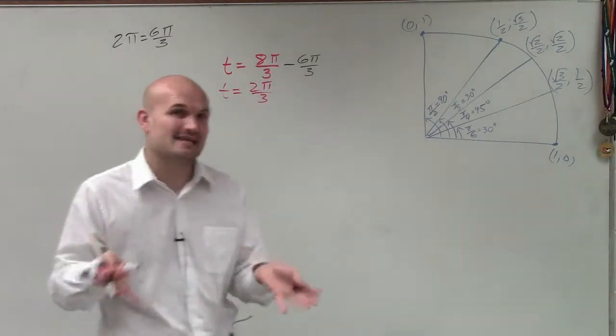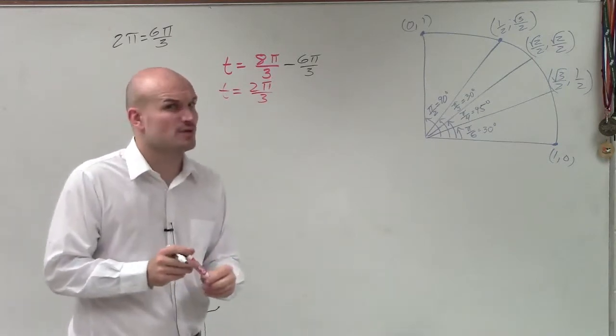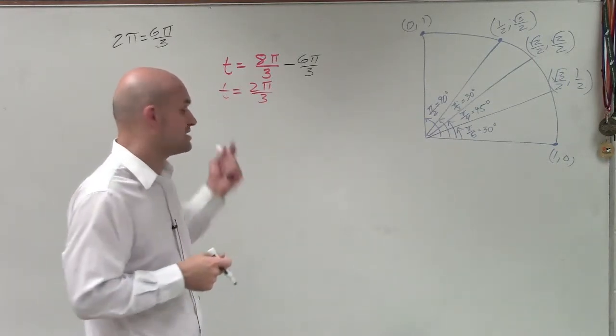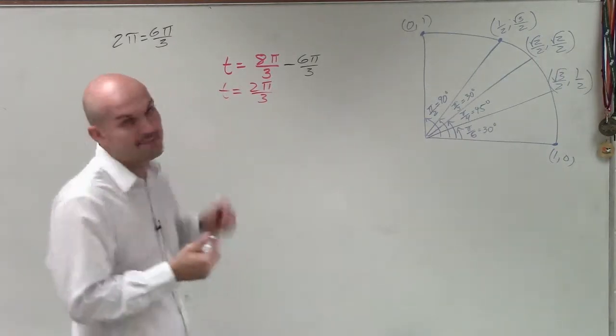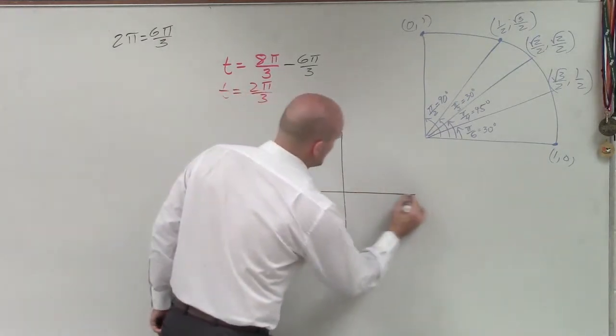These two angles have the exact same initial and terminal side, but it's much easier for me to visualize where 2π over 3 is compared to 8π over 3. So let's go and do a quick little sketch of where 2π over 3 is.